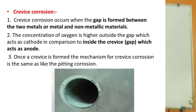Second is crevice corrosion. A gap or crevice can be formed between two metals or between metallic and non-metallic material. Crevice corrosion is seen due to the presence of a gap between a stainless steel tube and tube sheet in a seawater reverse osmosis plant. Once a crevice has formed, the mechanism of crevice corrosion is the same as for pitting corrosion.